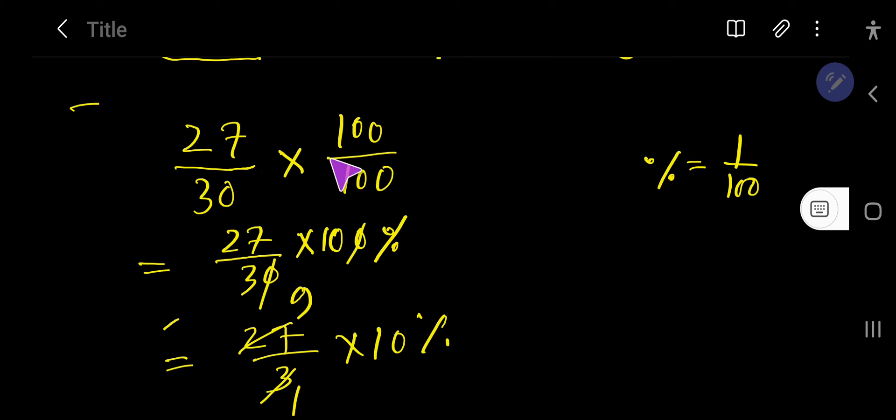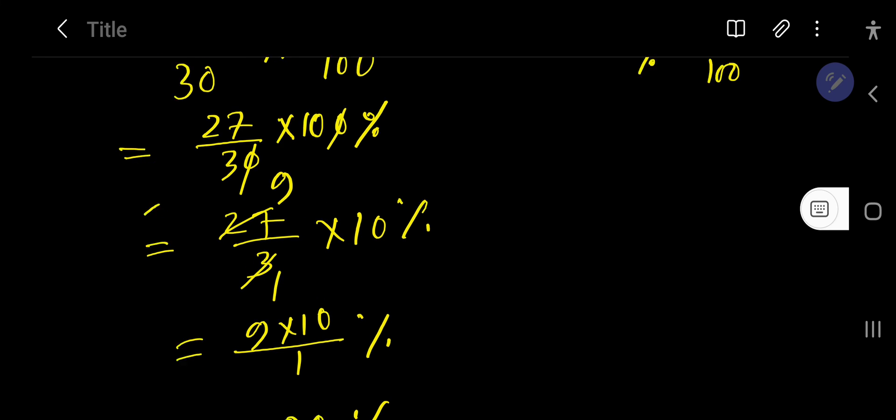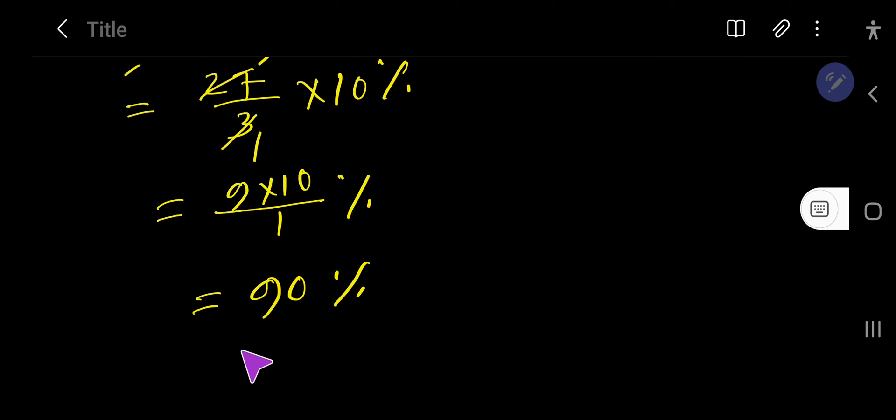Look, this is a fraction. You need to multiply by 100 over 100. 1 over 100 will be converted to percentage sign. Then you need to just reduce. And last, you are getting 90 percent.